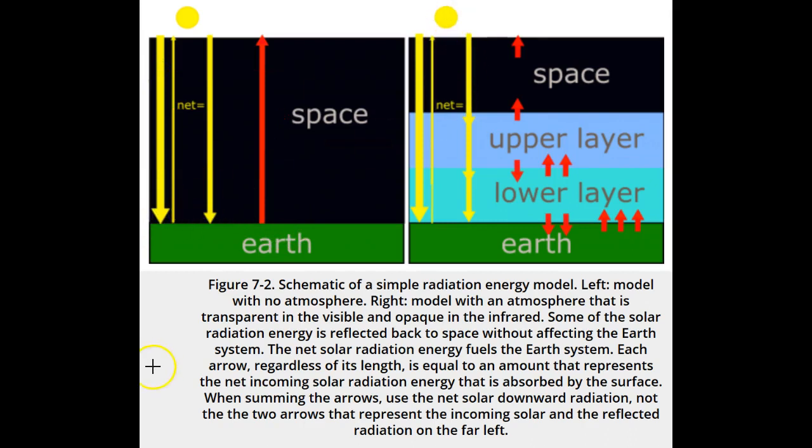Consider next a more realistic climate model, one that has two atmospheric layers that do not absorb the incoming solar radiation, but do strongly absorb infrared radiation.